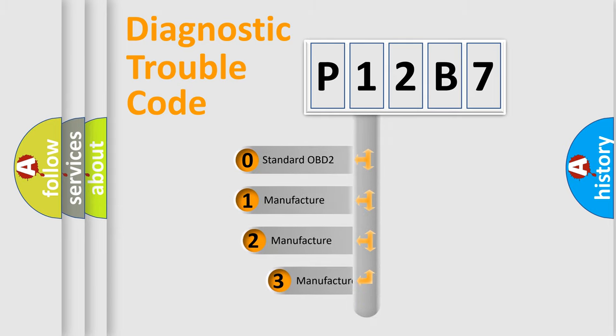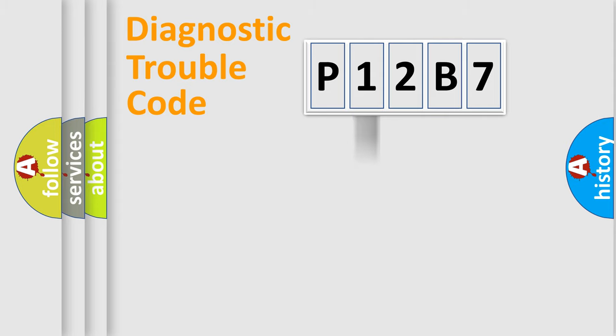If the second character is expressed as zero, it is a standardized error. In the case of numbers 1, 2, or 3, it is a more specific expression of the car-specific error.